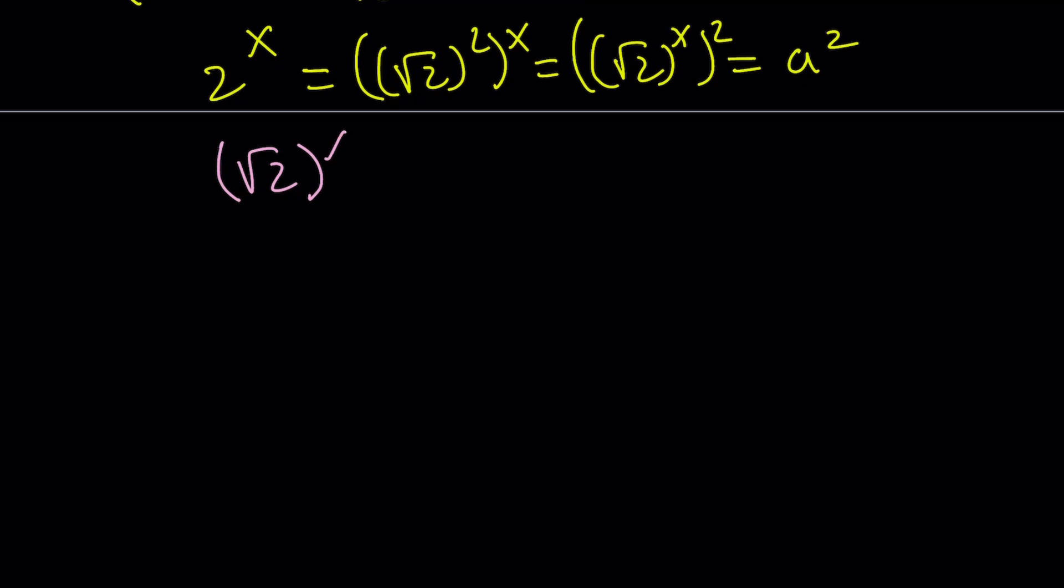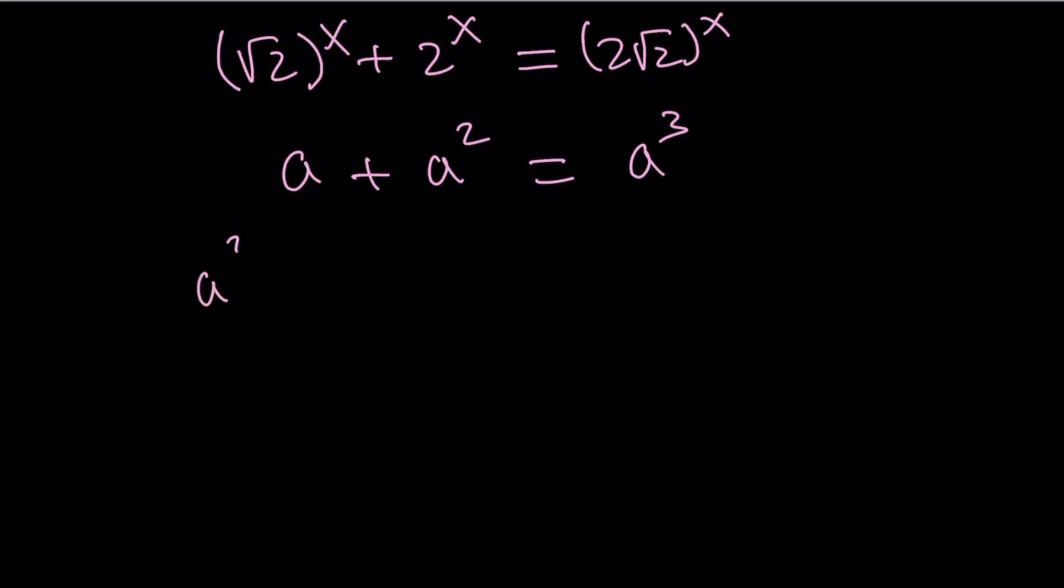So we get the following from the original equation. Let me write it one more time. Square root of 2 to the x plus 2 to the x equals 2 times the square root of 2 to the power x. Now we're going to replace square root of 2 to the power x with a. This is going to be a squared and this is going to be a cubed.